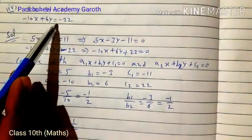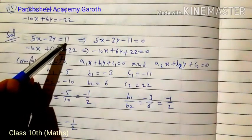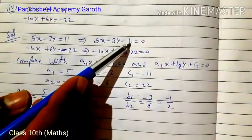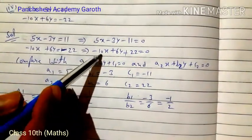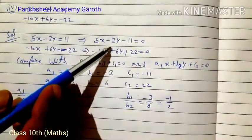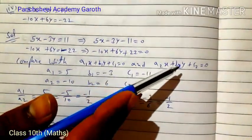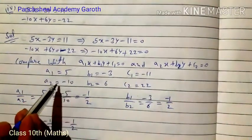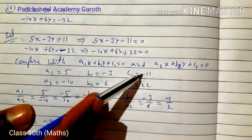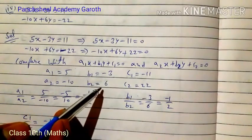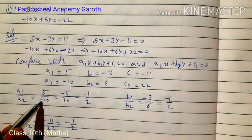Question number 4: 5x - 3y = 11 and -10x + 6y = -22. Convert to general form: equation 1 becomes 5x - 3y - 11 = 0, and equation 2 becomes -10x + 6y + 22 = 0. Compare with a1·x + b1·y + c1 = 0 and a2·x + b2·y + c2 = 0.